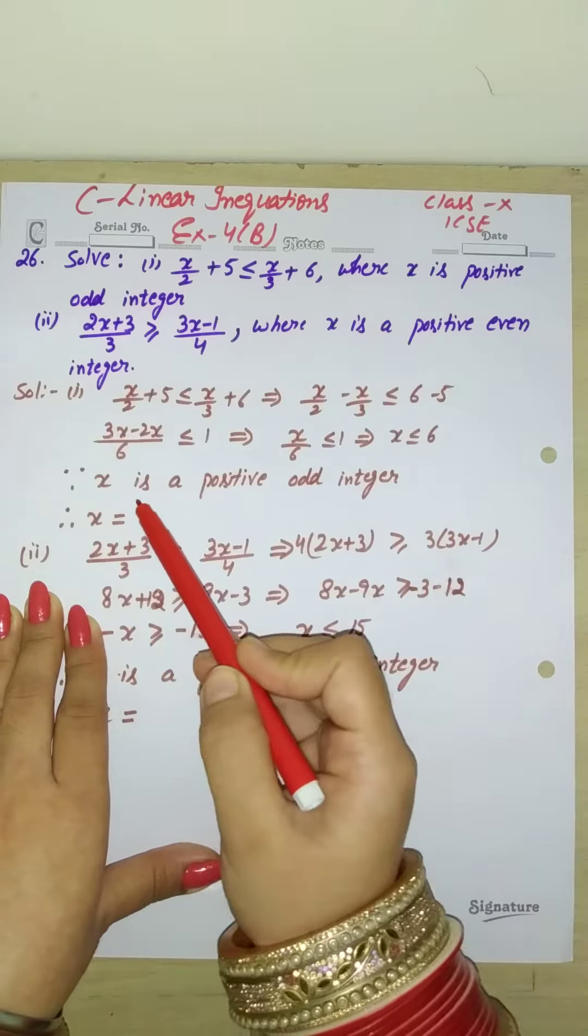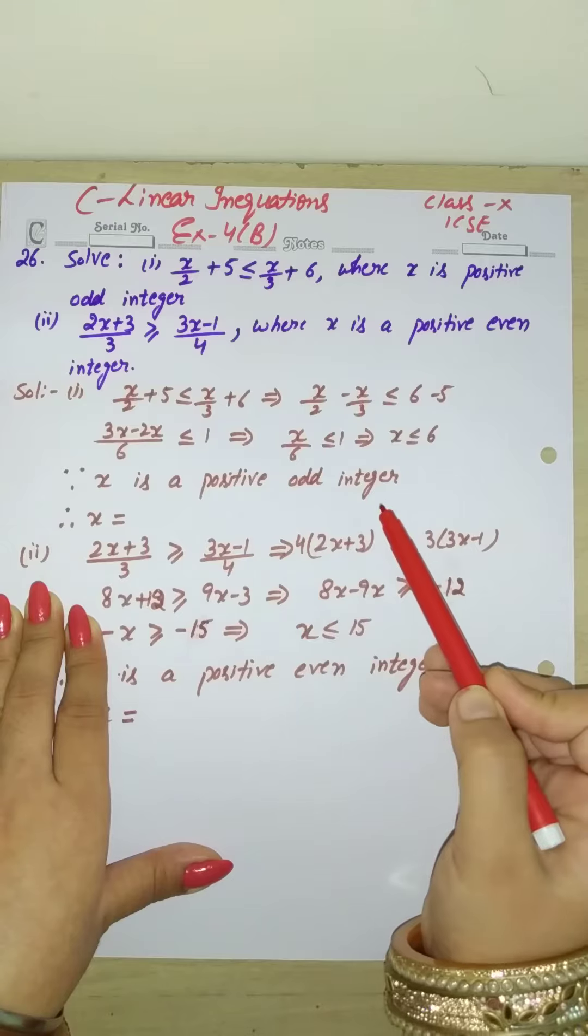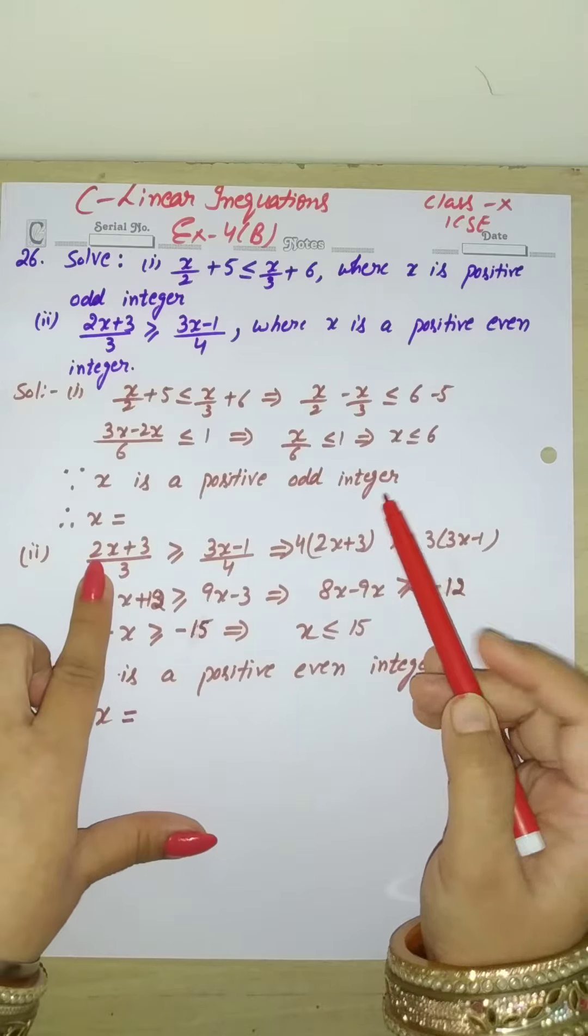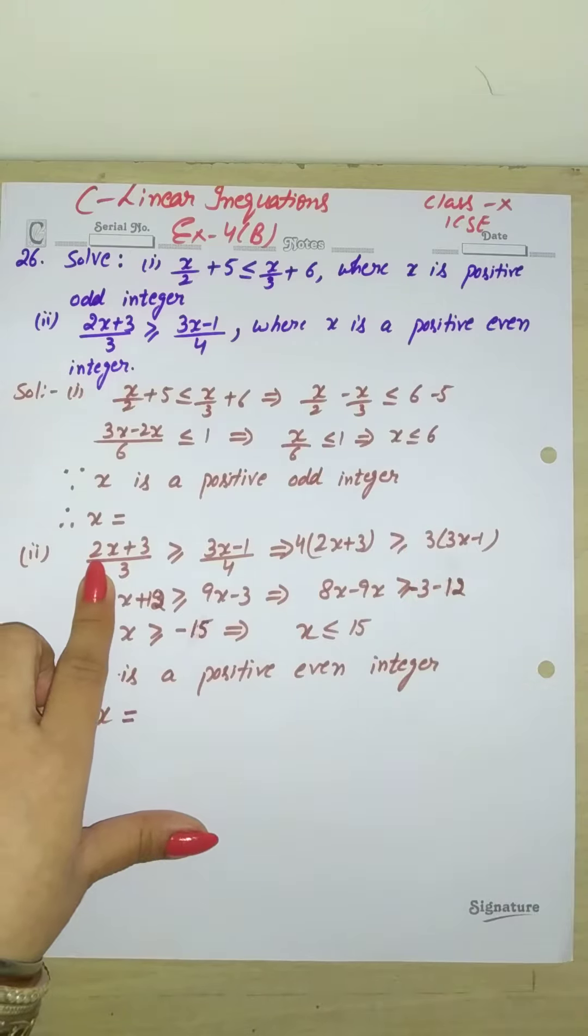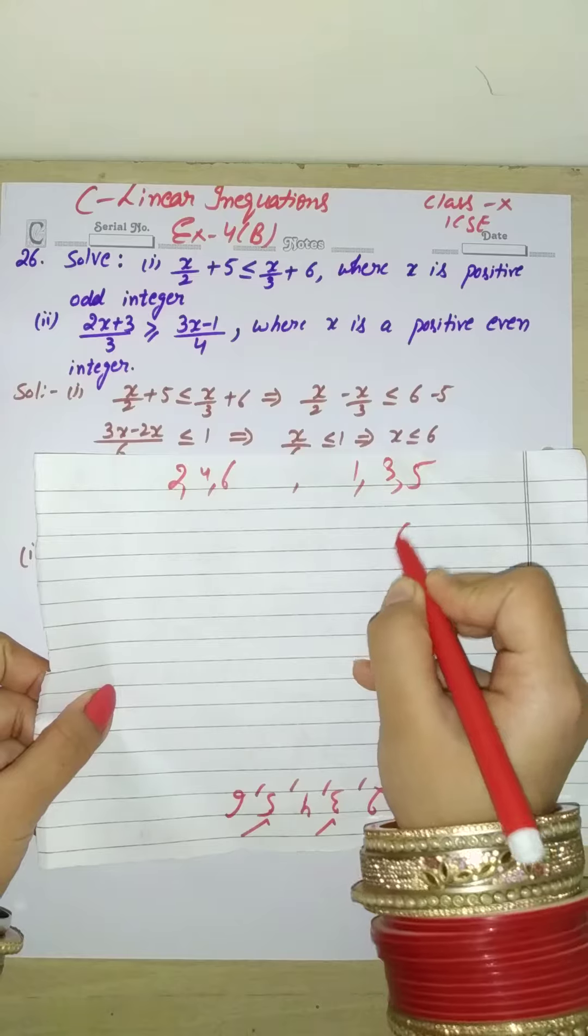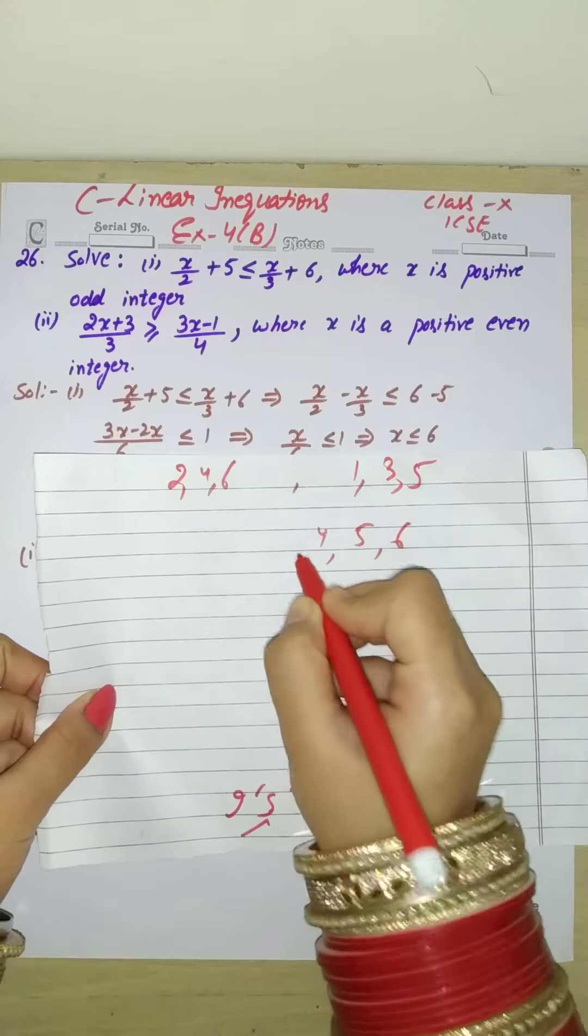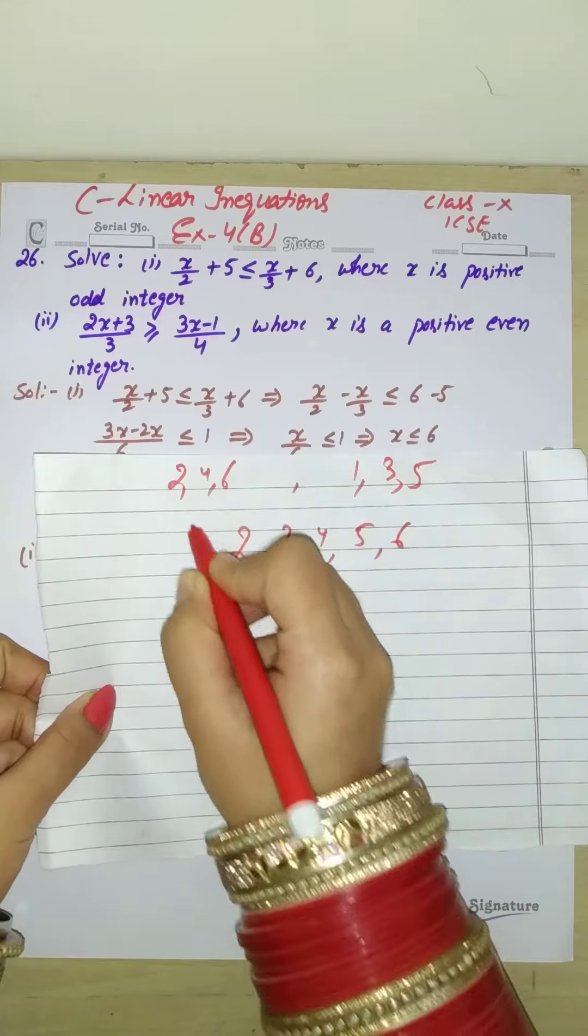Now, because x is a positive odd integer, if we see here x is less than or equal to 6, which numbers are less than or equal to 6? So 6 will come, 5, 4, 3, 2, 1.